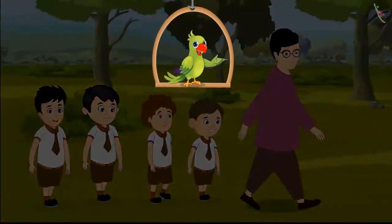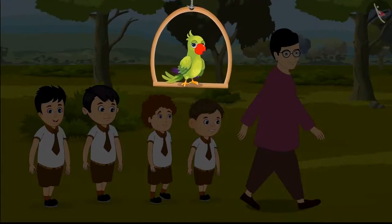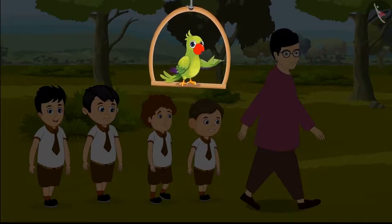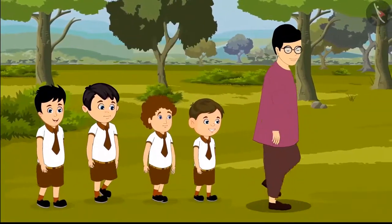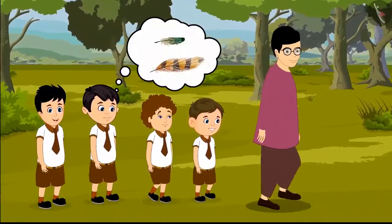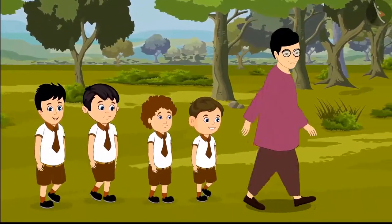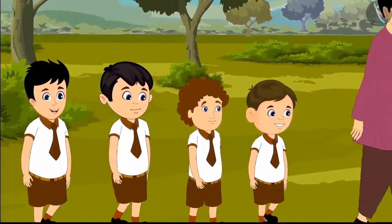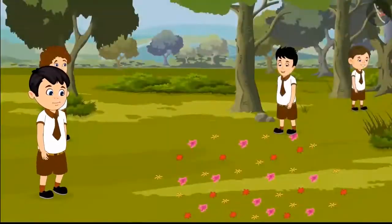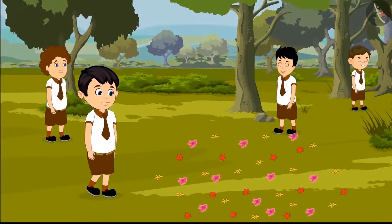Today, Chotu was taken for a walk by the school to a nearby forest. Chotu has homework to gather some things and paste them in his notebook. He thought of taking two flowers, two leaves, and two bird feathers from the forest. While walking, Chotu found a lot of fallen flowers under a tree.